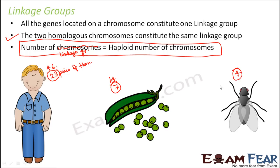Therefore, linked genes should not follow the law of independent assortment as given by Mendel, unless they get separated by the crossing over mechanism. Only because of crossing over can recombinants be formed. Otherwise, linked genes would not follow the law of independent assortment, because linked genes always tend to be inherited together and do not want to be segregated from each other.